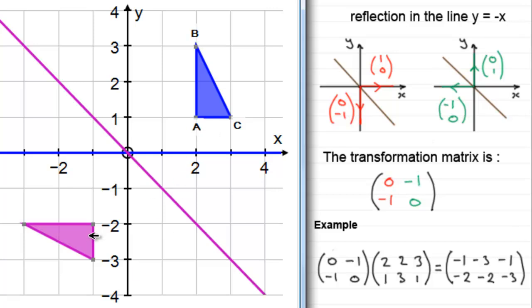I hope you can see that this clearly represents a reflection in the line y equals minus x. And as usual I would always encourage you to try other shapes in other positions, check out that by multiplying your shape with this matrix that it does generate a reflection in the line y equals minus x.